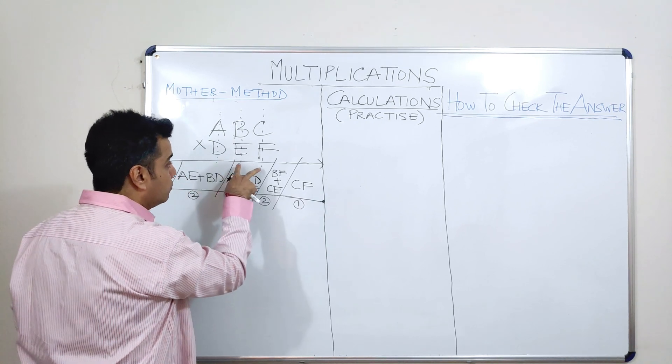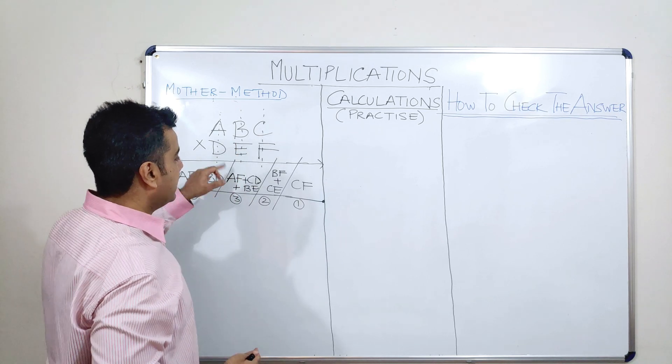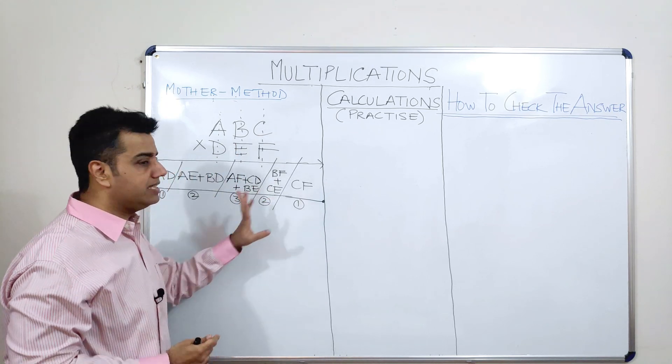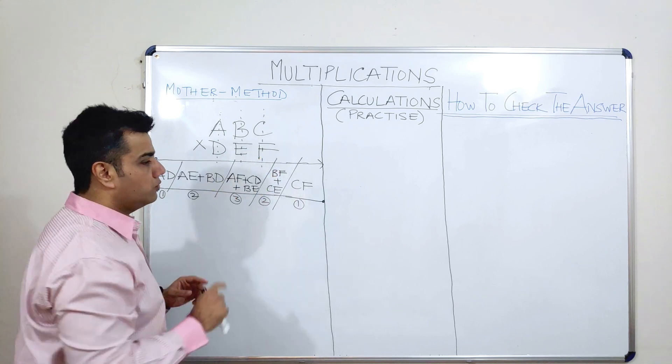So, when I am taking the remaining 2 columns, what am I supposed to do? I am supposed to multiply and add. Which is B into F plus C into E. Followed by the final column which is C into F.